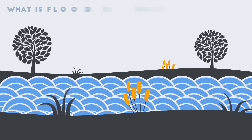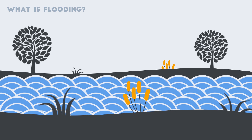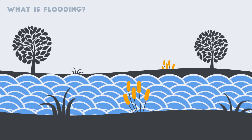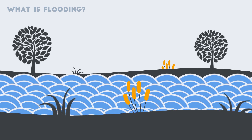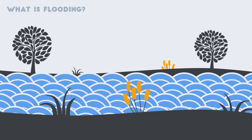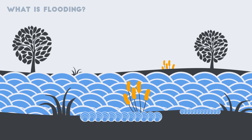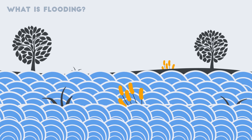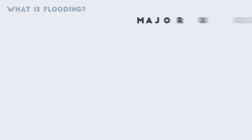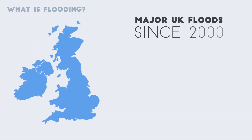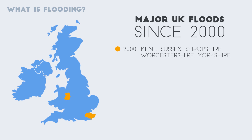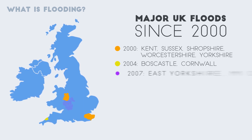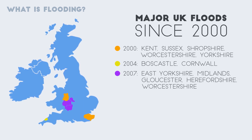Flooding is a natural process of river and coastal systems. It occurs when water levels exceed a river's carrying capacity and the water overtops the river's banks, or when land is flooded with seawater. Over the last 80 years, the UK has seen 12 major flood events, and seven of these have occurred since 2000.